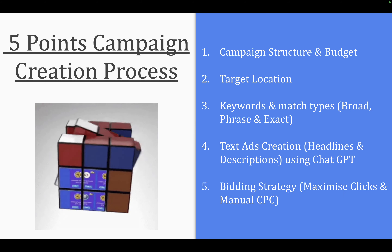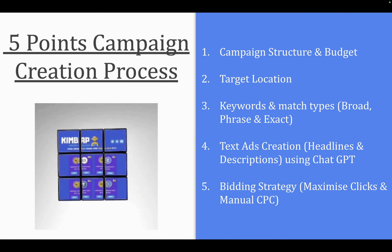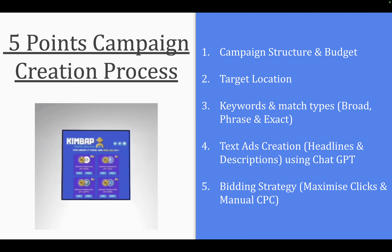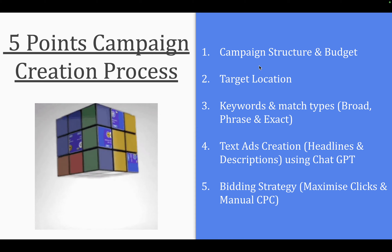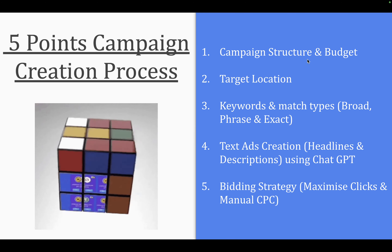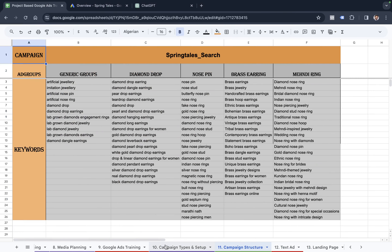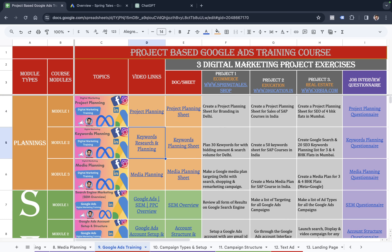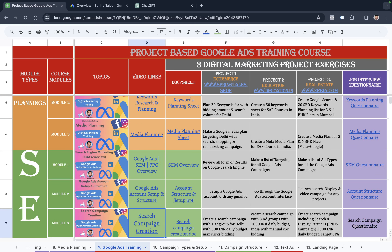So if you are with me, I can quickly jump into making a search campaign. But before we do so, let's talk about the campaign structure and budget. In this Google Ads training sheet, we have already covered project planning, then keyword planning and research in which we pulled out the keywords and media planning. Now we are jumping into the campaign structure part.